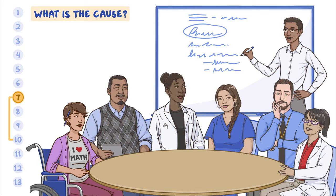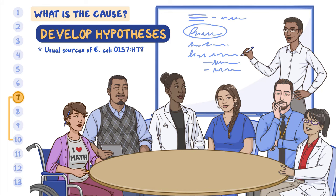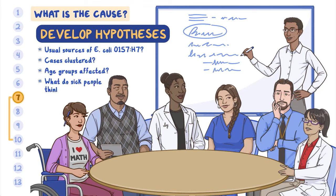Although the team has been thinking about possible causes from the beginning of the investigation, the next step is to develop hypotheses about the source of the outbreak. What are the usual sources of E. coli O157:H7 food poisoning? Are the cases clustered or grouped in one area? Or is only one age group affected? What do the sick people think might have caused their illness? Analyzing the patterns and answering these questions will help the team determine what is the cause of the outbreak.